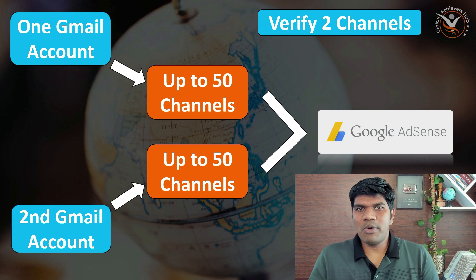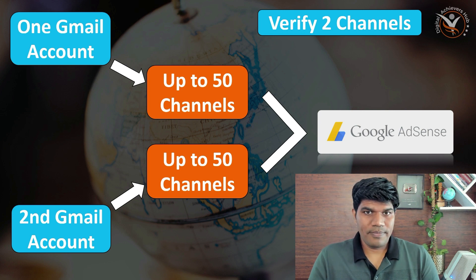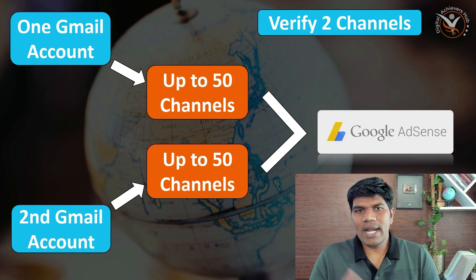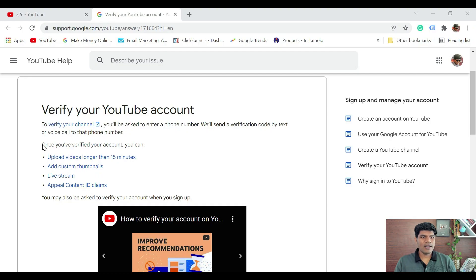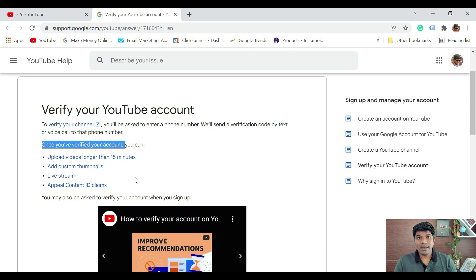I believe you got an idea about this. Now if you want to know how to create multiple channels from the same Gmail ID, I am going to show you right now. When you are creating multiple channels, it's always good to create them with the same Gmail account, so make sure you create one Gmail account and have all your YouTube channels under it — it becomes easy for you to manage. Managing channels across multiple Gmail accounts can be difficult. Once you have verified your account with a cell phone number, you can upload videos longer than 15 minutes, add a custom thumbnail, do live streams, and appeal content ID claims. These are the features enabled once you do phone verification for your YouTube channel.